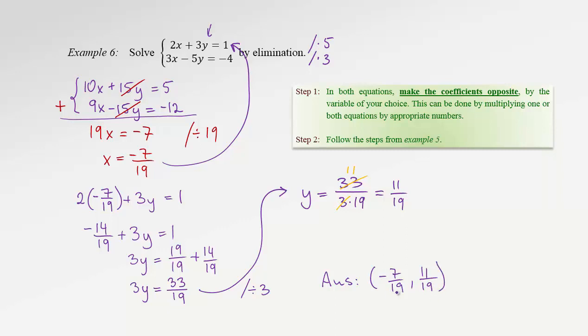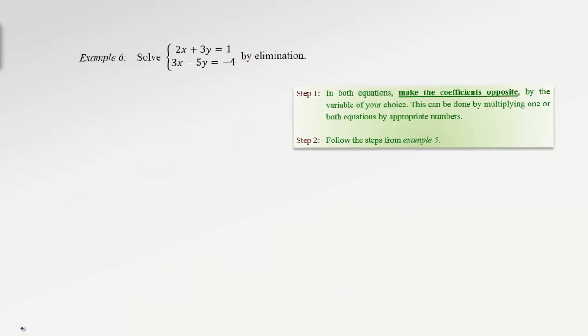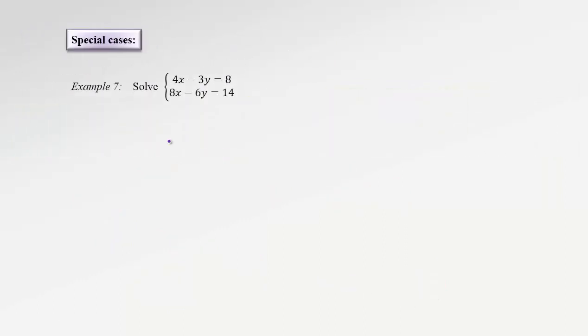Notice that these unpleasant fractional answers wouldn't be obtainable just by graphing. From the graphical method, we could only approximate our answers. For the exact values, we need to use algebra. So we've experienced both methods: substitution and elimination. Now let's look at some special cases.